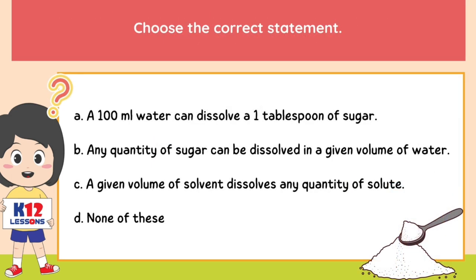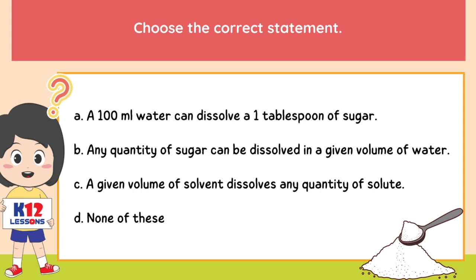Choose the correct statement. A. 100 milliliters of water can dissolve one tablespoon of sugar. B. Any quantity of sugar can be dissolved in a given volume of water. C. A given volume of solvent dissolves any quantity of solute. D. None of these.